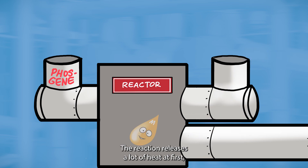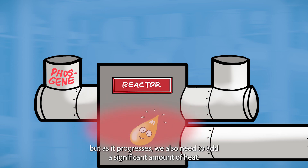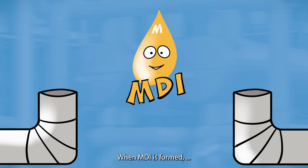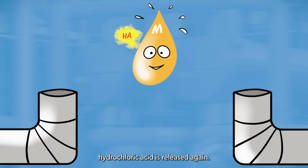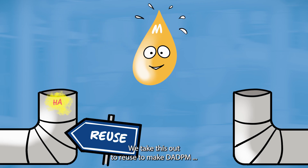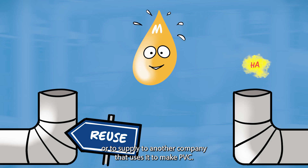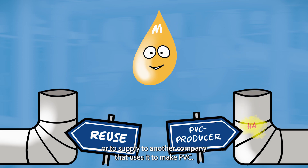The reaction releases a lot of heat at first, but as it progresses, we also need to add a significant amount of heat. When MDI is formed, hydrochloric acid is released again. We take this out to reuse to make DADPUM, or to supply to another company that uses it to make PVC.